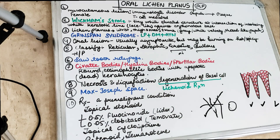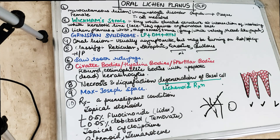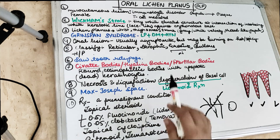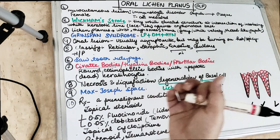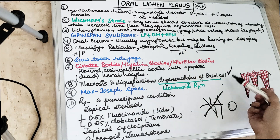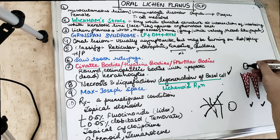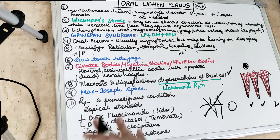Histologically, we also see Max-Joseph spaces — cleft-like spaces present at the epithelial-connective tissue interface. In oral lichen planus, there is infiltration of lymphocytes sharply limited to the papillary and superficial reticular layer of connective tissue. The remnant cells of the degenerated epithelium with dead keratinocytes are called civatte bodies, and due to the thinning of the epithelium, we see those characteristic saw-tooth rete pegs.